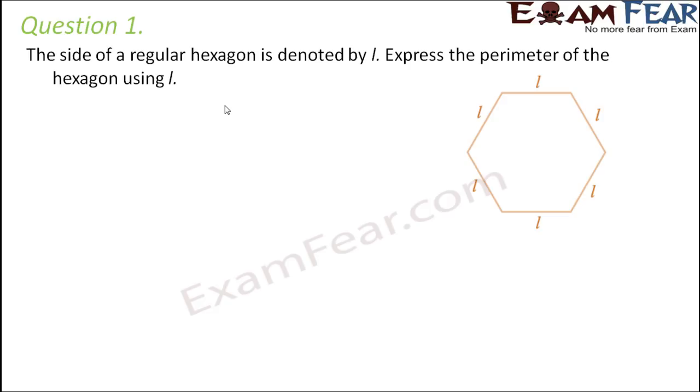Question number 1. The side of a regular hexagon is denoted by L. Express the perimeter of the hexagon using L. So what is the meaning of perimeter? Perimeter is nothing but the total length of boundary, that is the sum of all sides. So how many sides do you have in this case? You have 6 sides. So that is 6 multiplied by the length of each side which is L. Therefore perimeter will be equal to 6L.